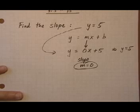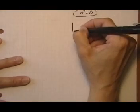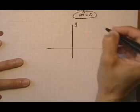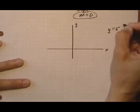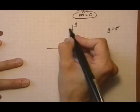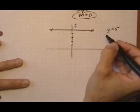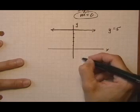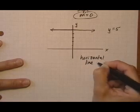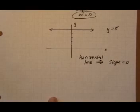Another way to look at this is to graph it. If we have y equals 5, that means y is always 5, no matter what x is. Plotting that gives a horizontal line at y equals 5. A horizontal line always has a slope of 0. That's another way you can think about that slope.